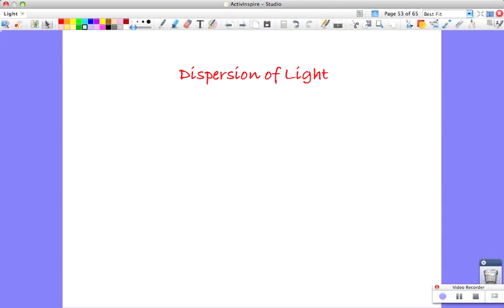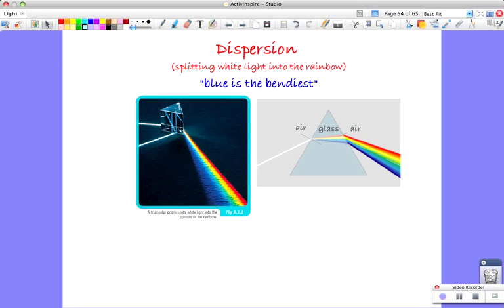Hi everyone, this is our screencast on dispersion of light. We're going to talk about dispersion, which is the splitting of white light into the rainbow, and you can see that very nicely with a prism.